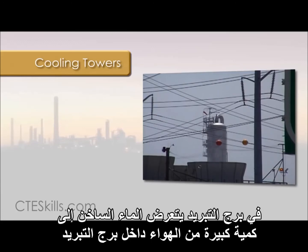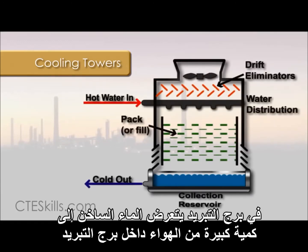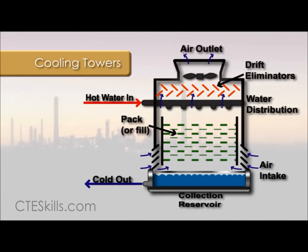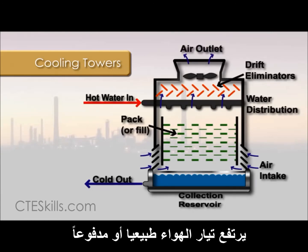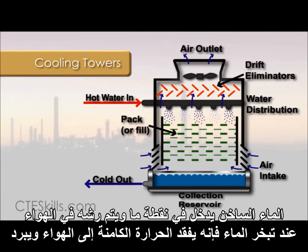One example of an air-cooled heat exchanger is a cooling tower. In a cooling tower, hot water is exposed to a large volume of air inside the cooling tower. A current of air rises by means of natural or forced draft, and hot water enters at some point and is sprayed into the air. As the water evaporates, it loses latent heat to the air and is cooled.